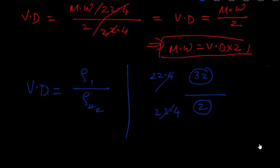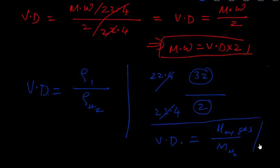The volume always cancels out. So for gases, if the volumes are the same, vapor density equals the molar mass of any gas over the molar mass of hydrogen. That's why this formula always works for gases but not for liquids or solids.